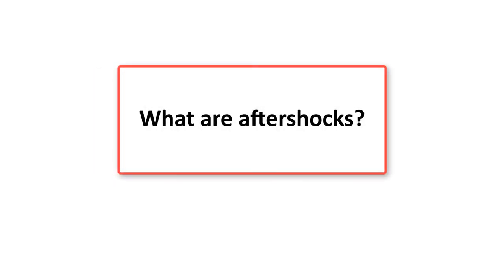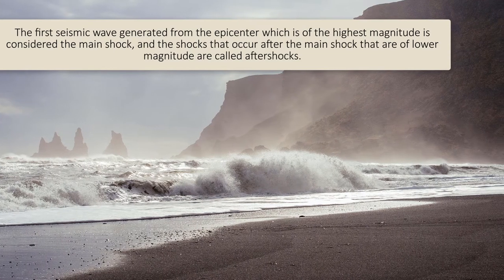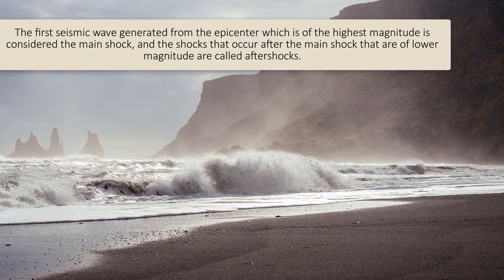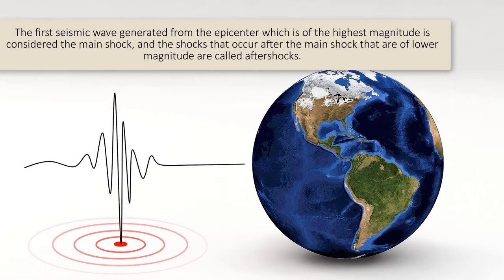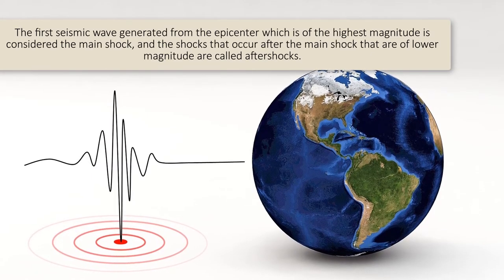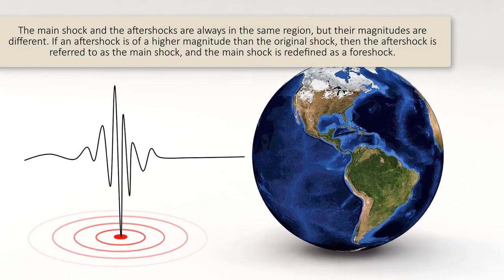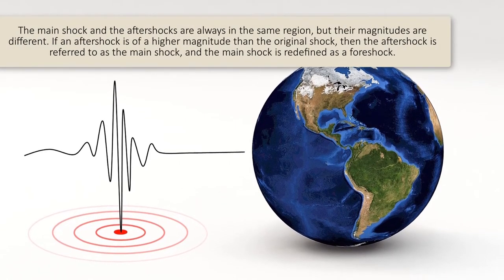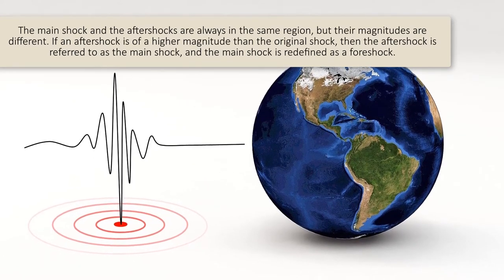What are aftershocks? The first seismic wave generated from the epicenter, which is of the highest magnitude, is considered the main shock. The shocks that occur after the main shock that are of lower magnitude are called aftershocks. The main shock and the aftershocks are always in the same region but their magnitudes are different.